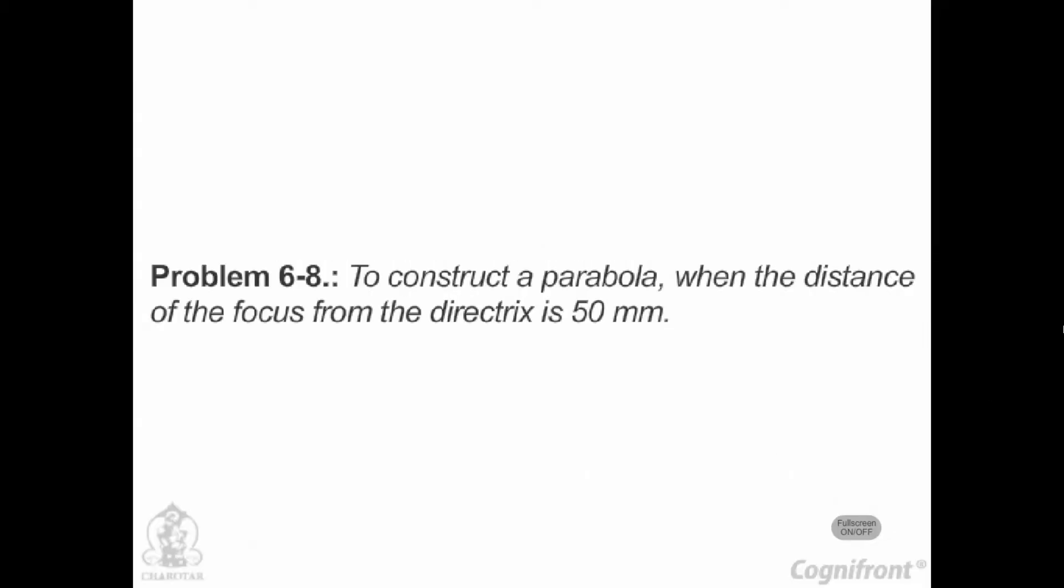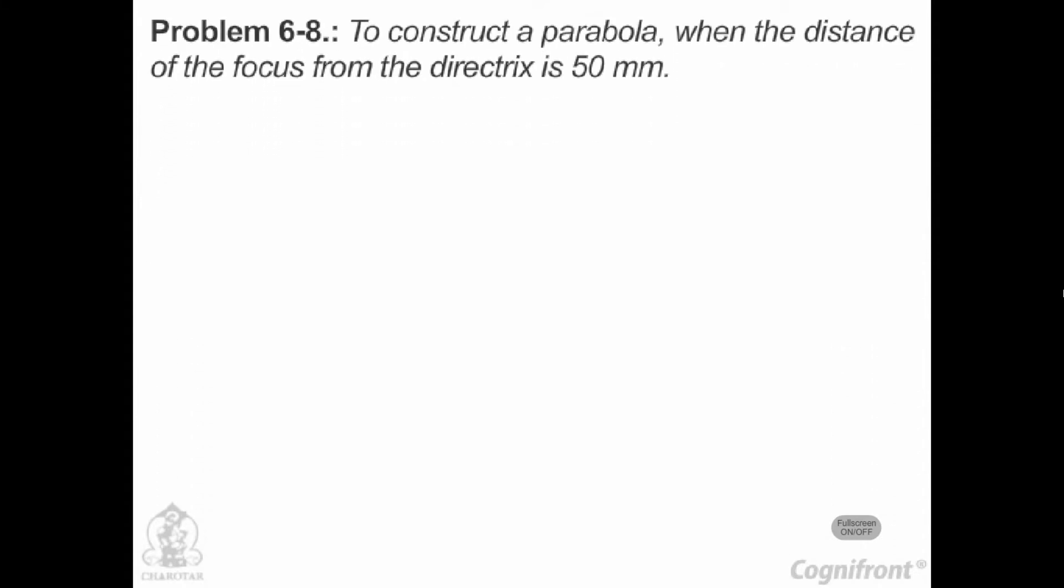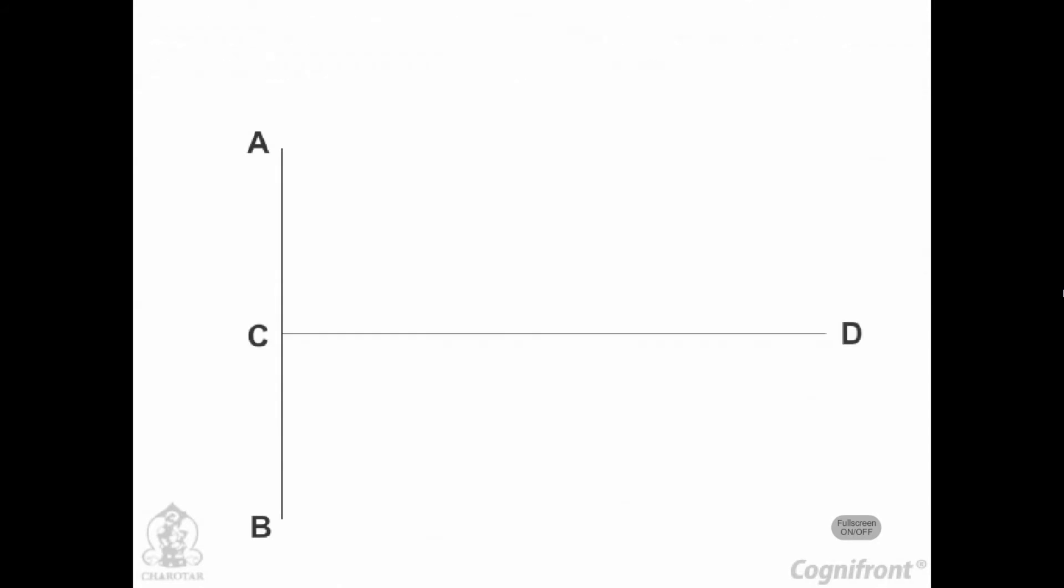Problem 6.8: To construct a parabola when the distance of the focus from the directrix is 50 mm, draw the directrix AB and the axis CD, then mark focus F on CD 50 mm from C.